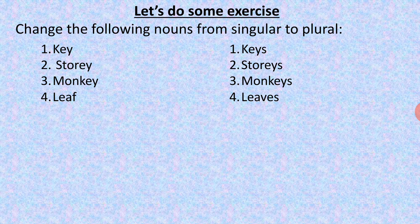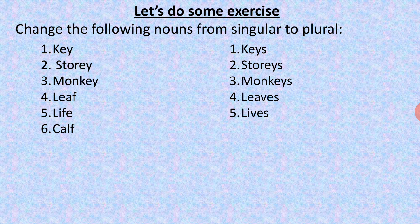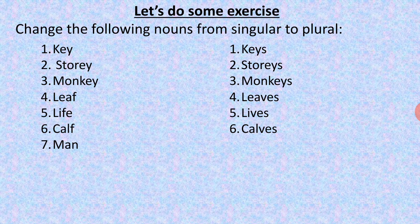Then 'leaf' — 'f' is coming at the end of the noun, so it becomes 'leaves': l-e-a-v-e-s. Then 'life' — 'fe' is coming at the end, so again it changes to 'l-i-v-e-s', 'lives' — 'f' is replaced by 'ves'. Then 'calf' — it will change to 'calves': c-a-l-v-e-s.